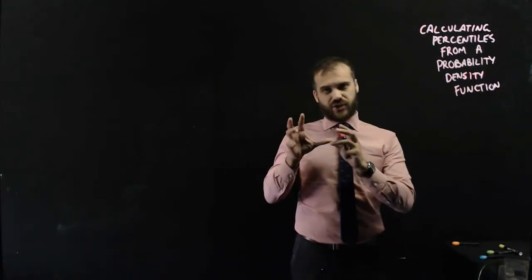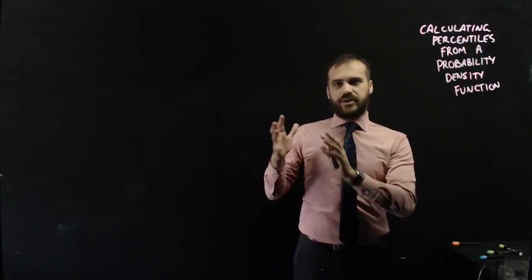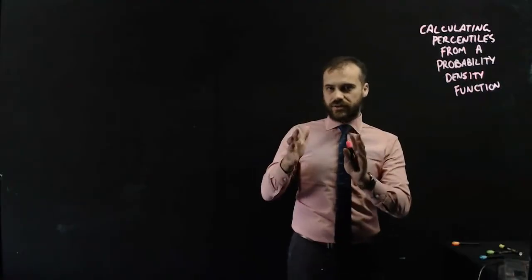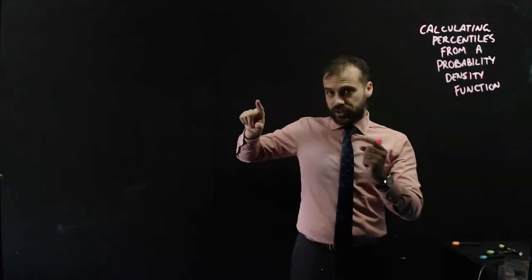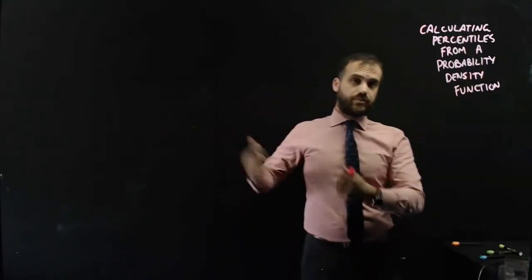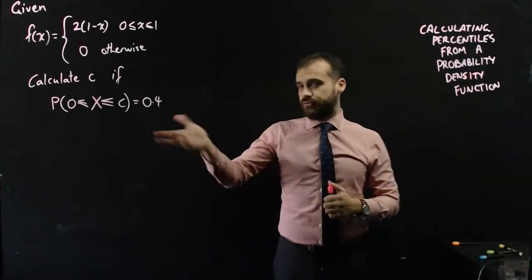So you've been using integration to find the probability that something happens. Find the area under the curve and that gives you the probability. Now, as is so often the case, we're going to reverse that process.